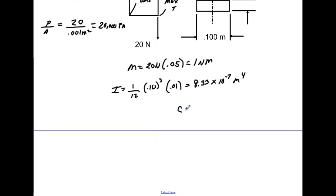Now, our c value is going to be the distance from here to this axis, or from here to the outer fiber. That would be 0.05.